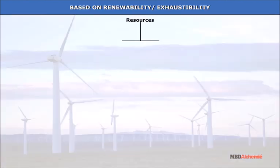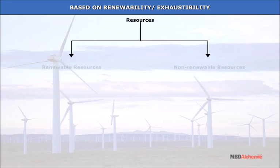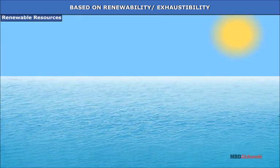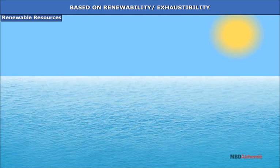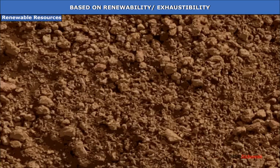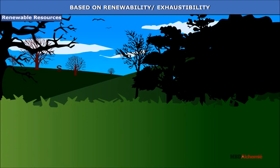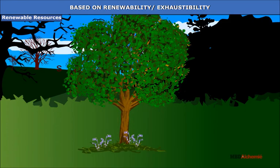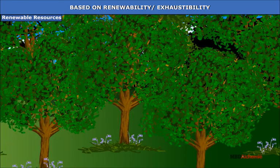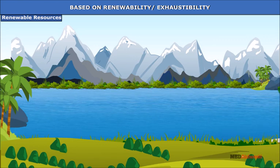Based on renewability, renewable resources include water, forests, soil etc. This renewability is possible only under certain conditions. Some trees may also take longer time to grow; for example, it takes between 50 to 200 years for a tree to grow in a forest.